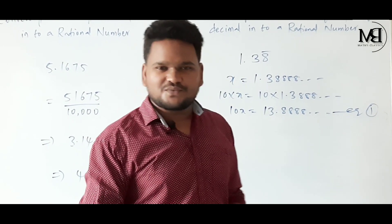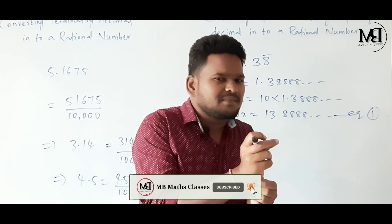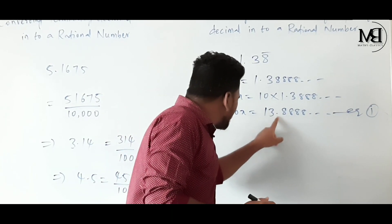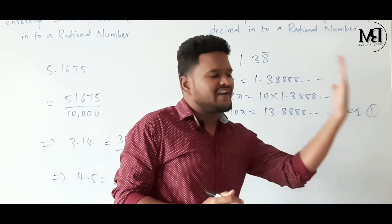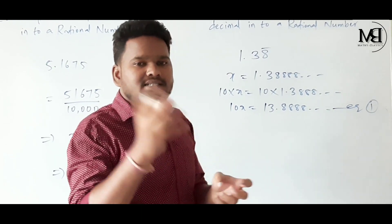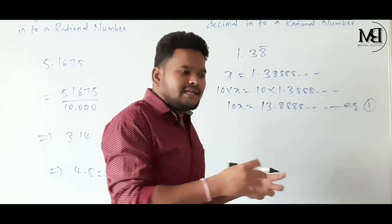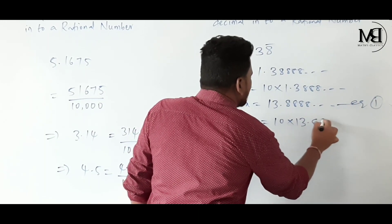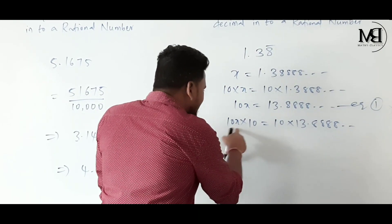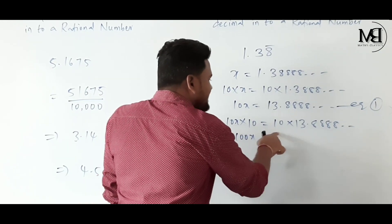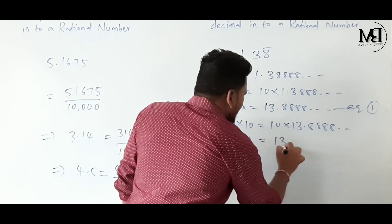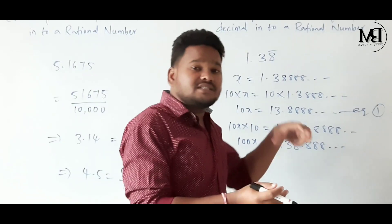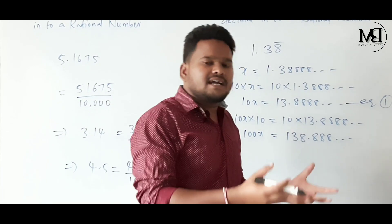Point number 2: we must keep the decimal point after the digit which is repeated. From equation 1, we move the decimal point one more step right by multiplying by 10 again. So 100X = 10 × 13.888... = 138.88... The decimal point is now after the repeated digit 8, so we consider 100X = 138.88... as equation 2.